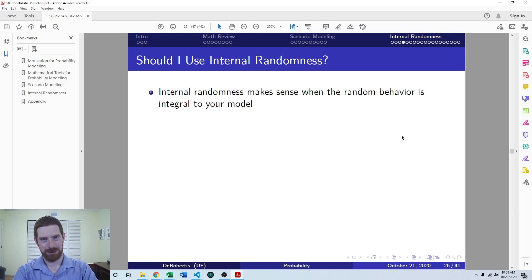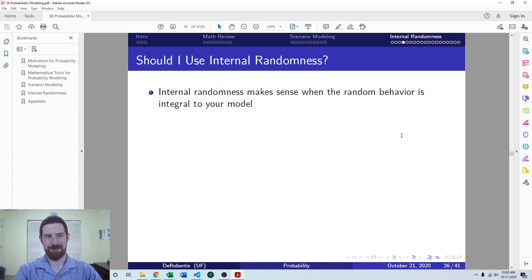Considering those kinds of drawbacks with internal randomness, you really only want to use this technique when this randomness is very important and core within your model. There are other ways you can add this kind of randomness to your model. Monte Carlo simulation, which will be our next main topic of exploring the parameter space, is basically the external counterpart to internal randomness.